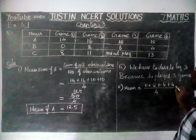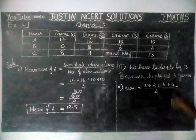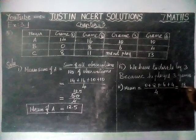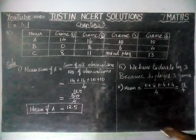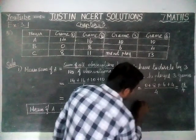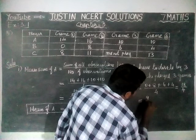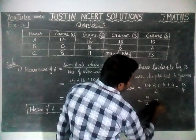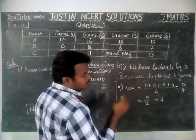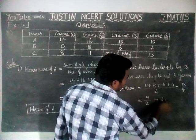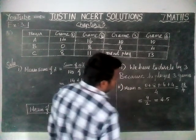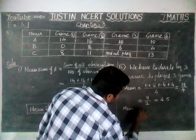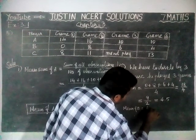Finding the total: 6 plus 4 is 10, 10 plus 8 is 18, divided by 4. Simplifying: 18 divided by 4 equals 4.5. The mean of player B is equal to 4.5.